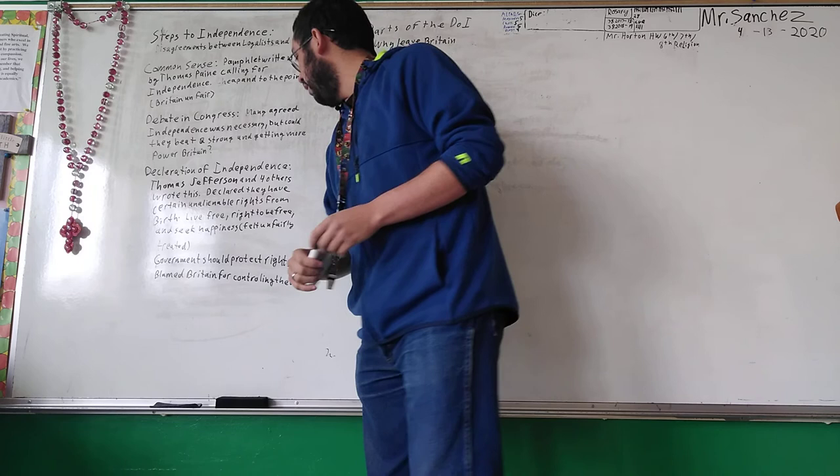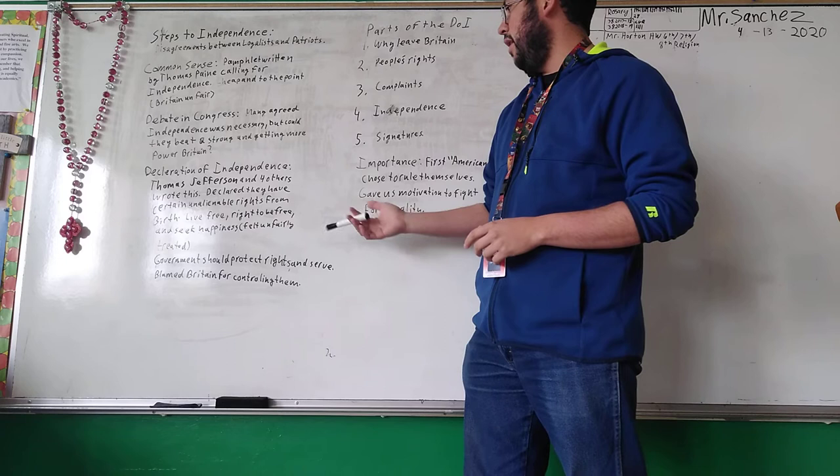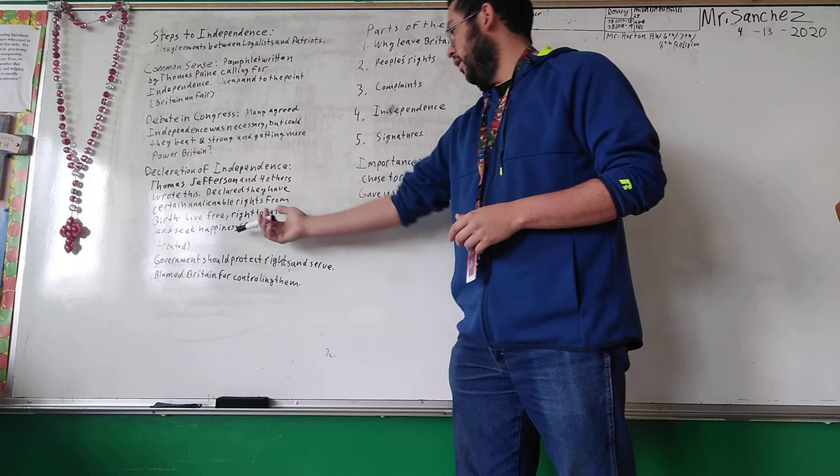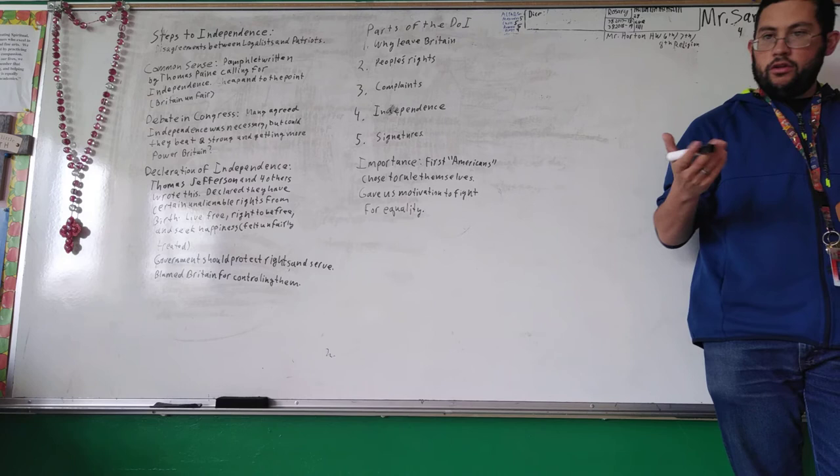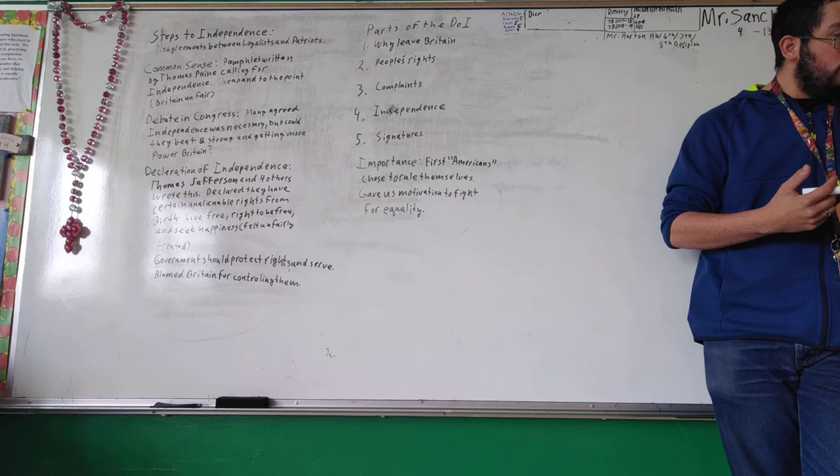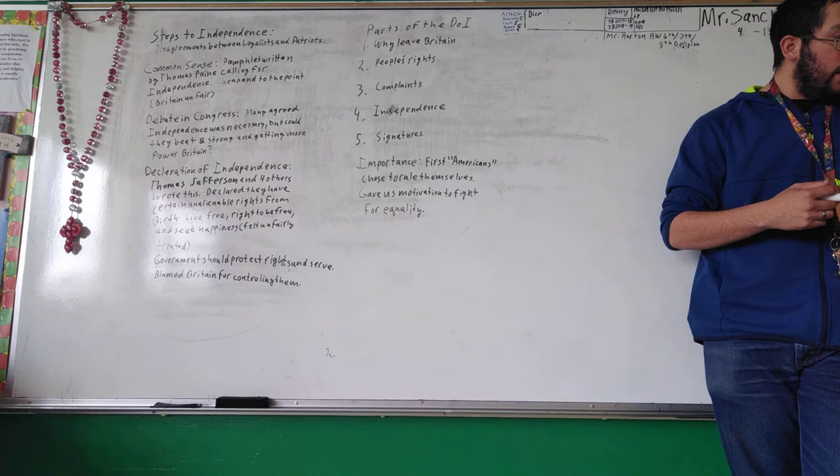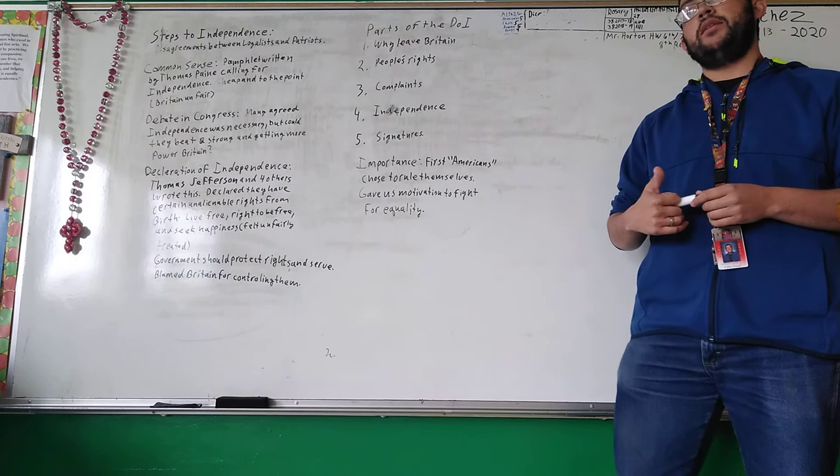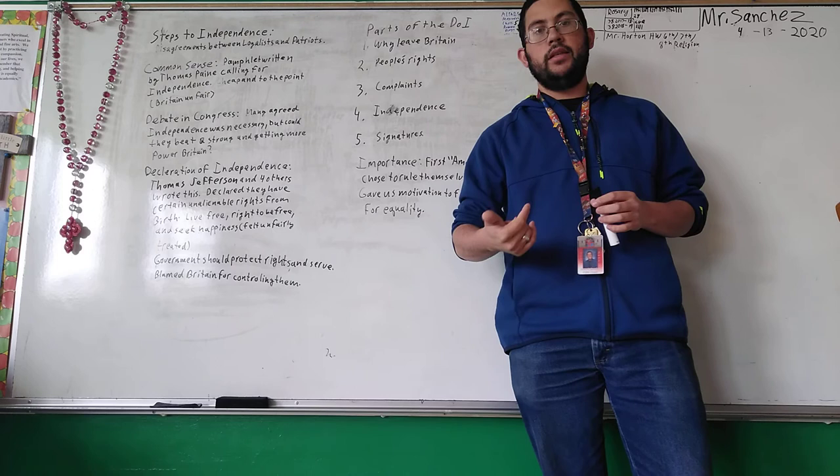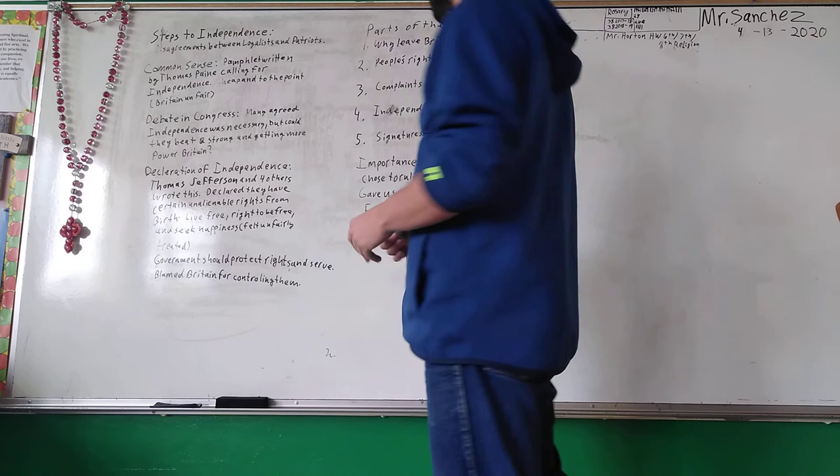You get to the Declaration of Independence then. Thomas Jefferson is the main writer, but there are four other writers there. He basically writes down how they declare that they have certain rights. Those rights are to live free, the right to be free. The full quote, which is quoted a lot by historians and political people: We hold these truths to be self-evident, that all men are created equal, that they are endowed by their creator with certain unalienable rights, that among these are life, liberty, and the pursuit of happiness. So they're going off this idea that we have rights. This is why we're declaring independence. We have this right to not be forced to pay taxes, we have rights to seek happiness, not to be oppressed but to seek happiness.